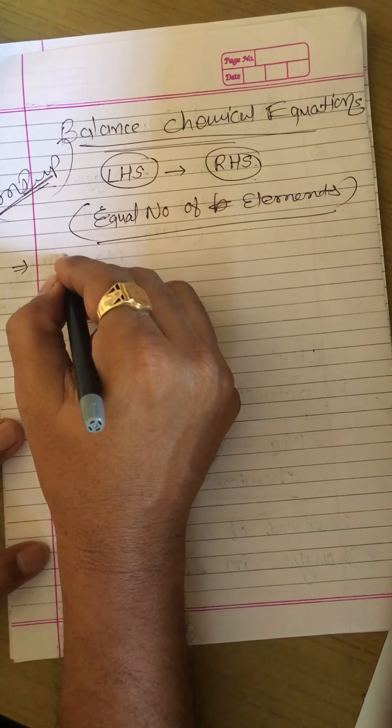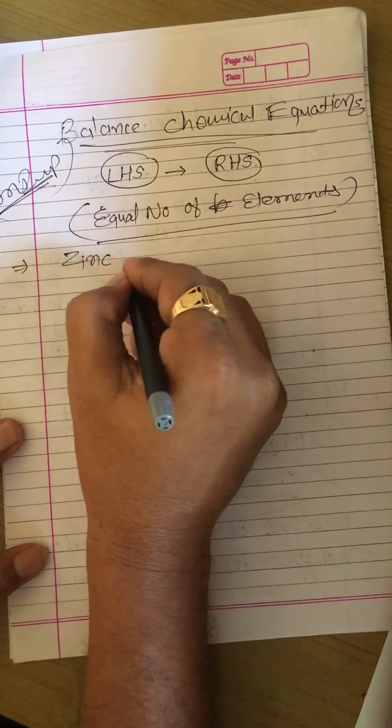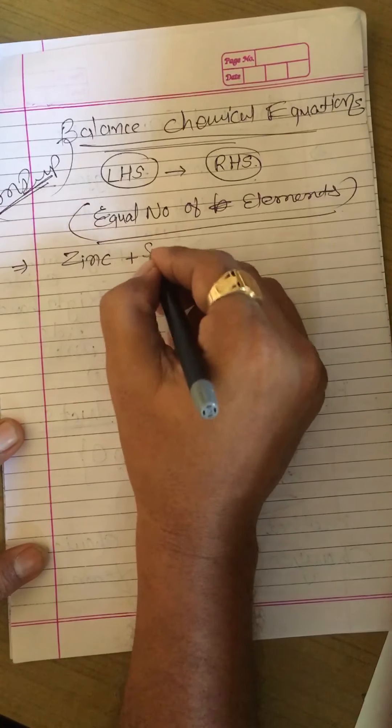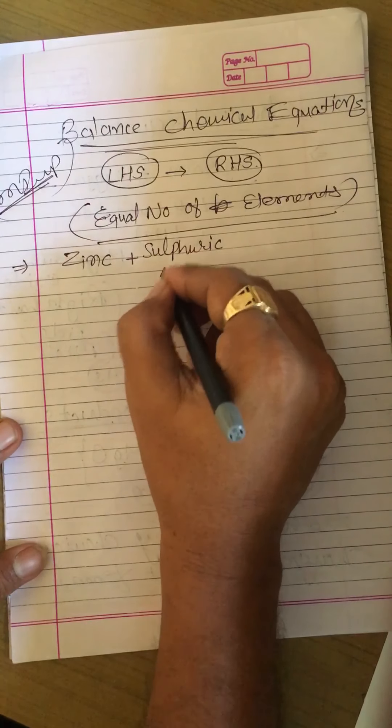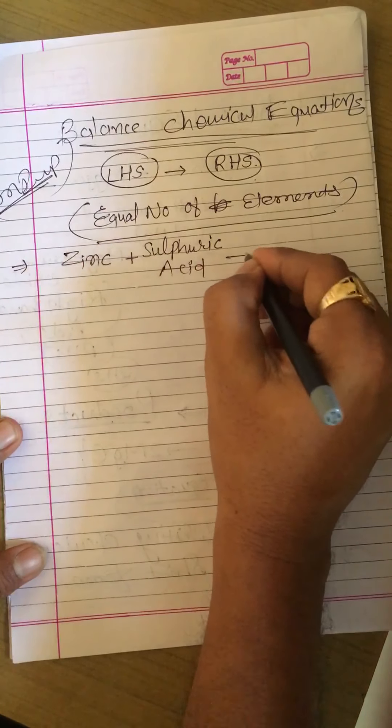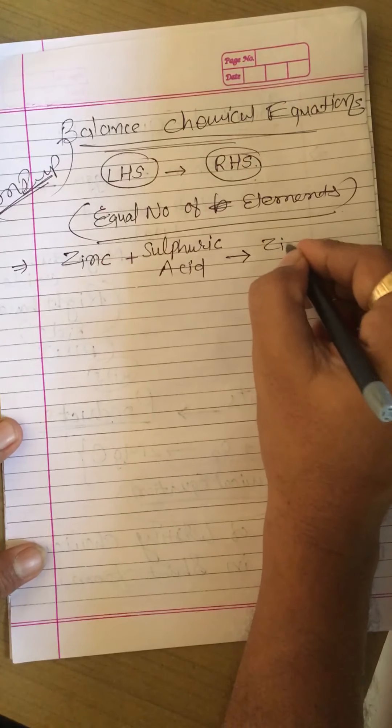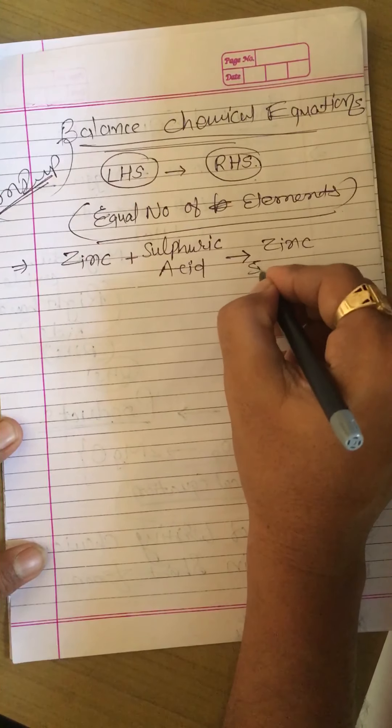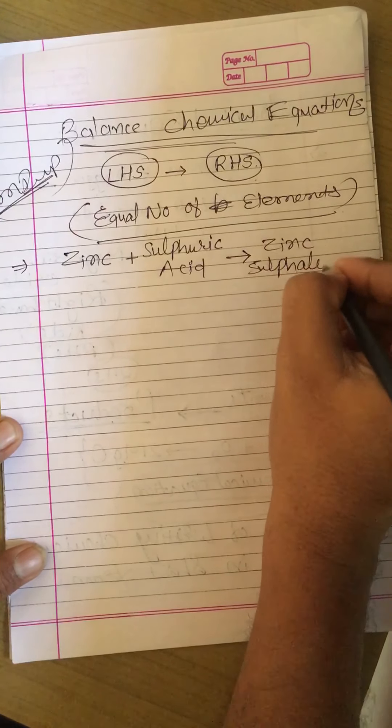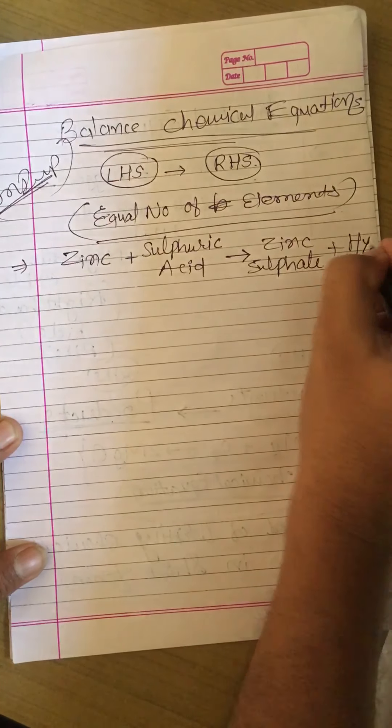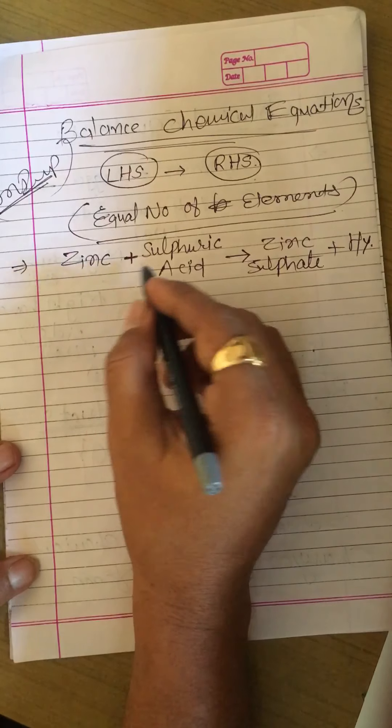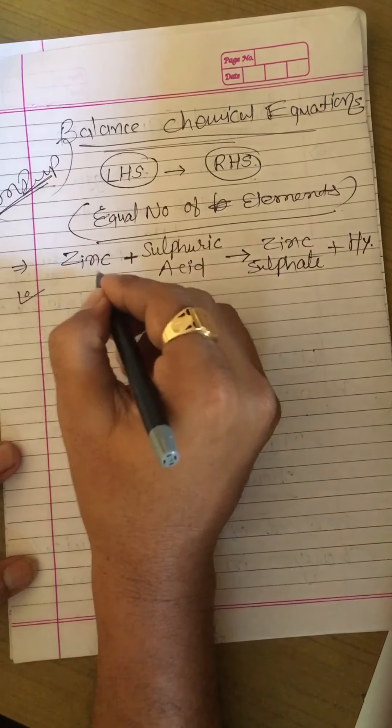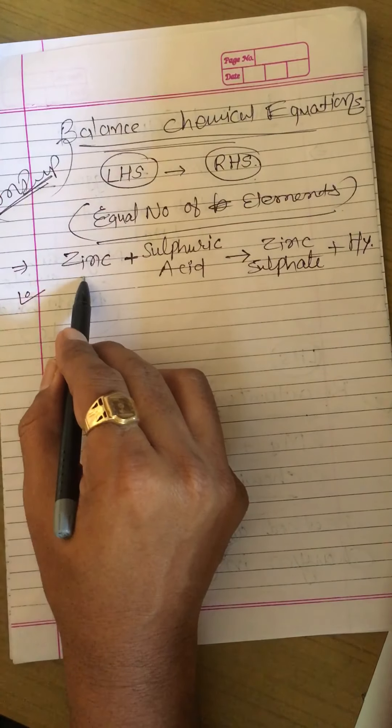Second example: let's take friends, in which zinc granules when react with sulfuric acid, which we have seen in activity number 1.3, we observed that zinc sulfate and hydrogen gas is produced. If we want to describe this in simple word form we can say friends, zinc...